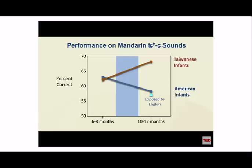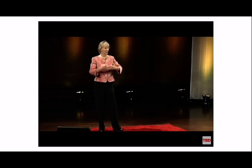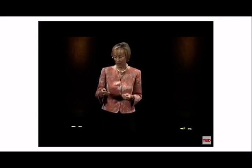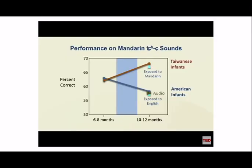After just 12 sessions of Mandarin exposure, American babies were as good as babies in Taiwan who had been listening for 10 and a half months. A control group exposed to English instead showed no improvement in Mandarin. This demonstrates that babies take statistics on any new language put in front of them. However, researchers wondered what role the human being played — so they ran groups where babies received the same dosage via television or audio only.